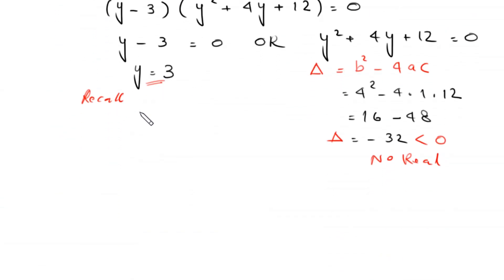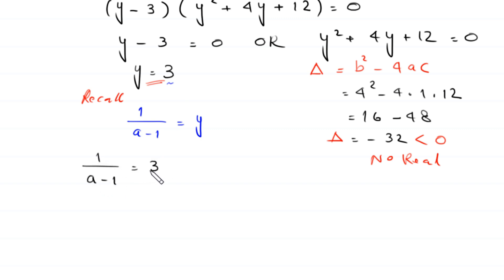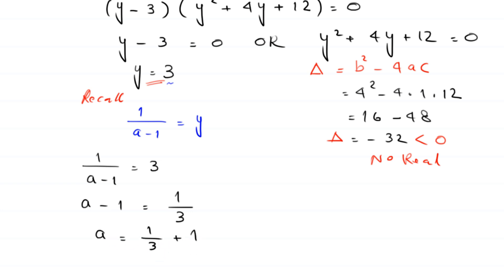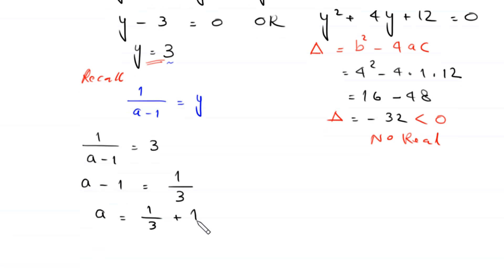Recalling that 1 over (a minus 1) equals y and y equals 3, we have 1 over (a minus 1) equals 3. Taking reciprocals on both sides gives a minus 1 equals 1 over 3, so a equals 1 over 3 plus 1.